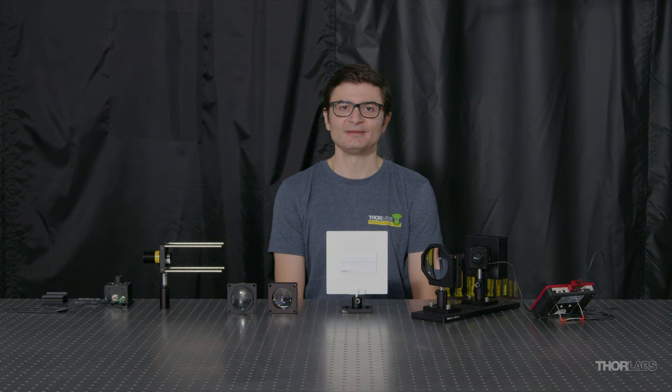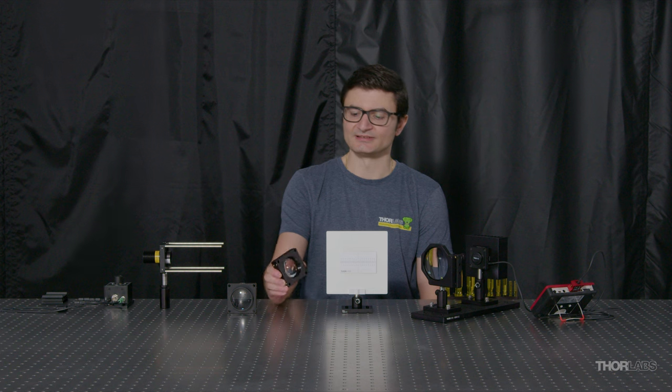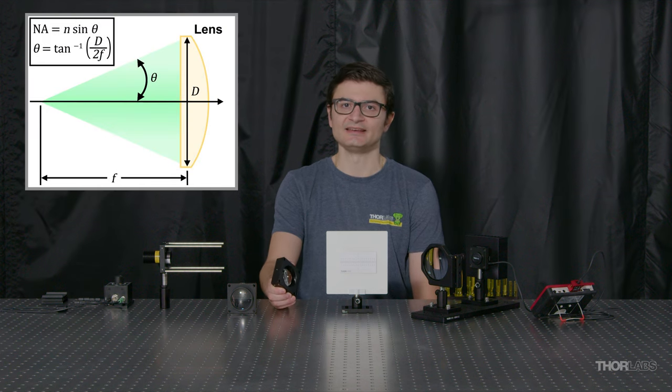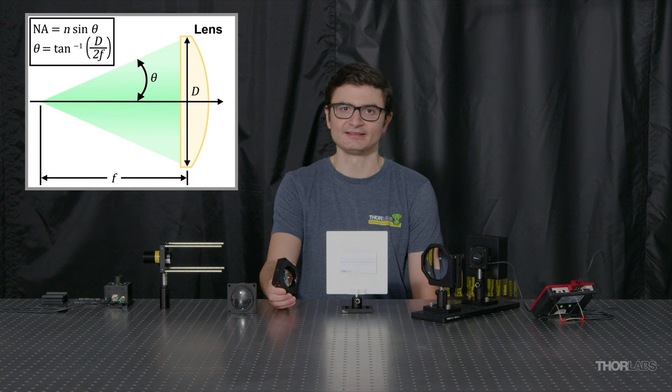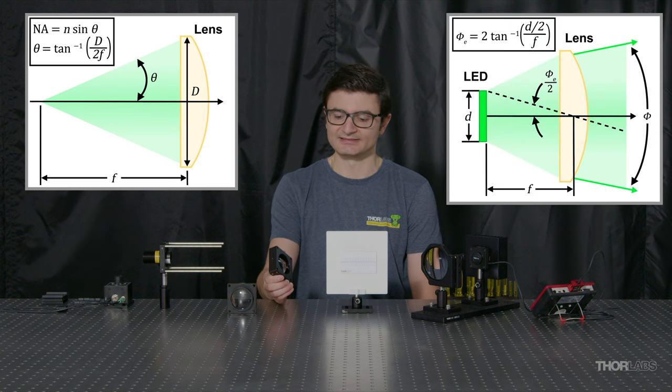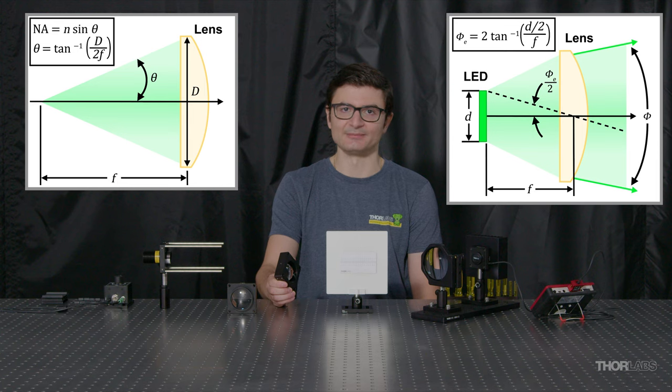Now let's see what happens when I collimate my LED with these two aspheric lenses. My first lens is a 2 inch diameter aspheric condenser lens with 0.76 NA and 32 millimeter focal length. I expect the high numerical aperture to provide high throughput, but the short distance between the LED and the lens leads to high divergence in the output beam.